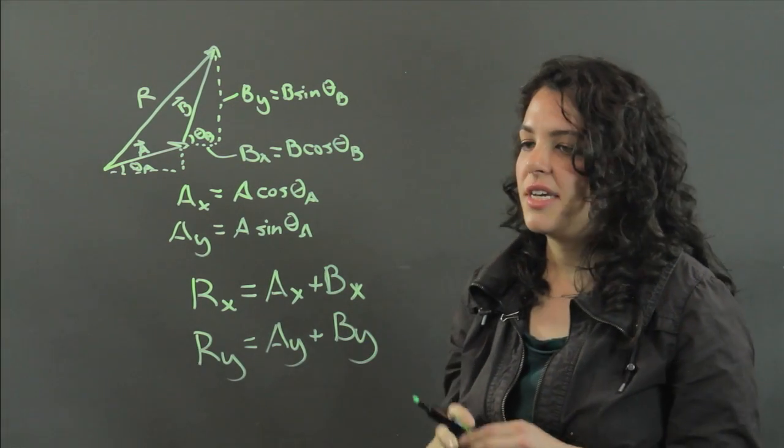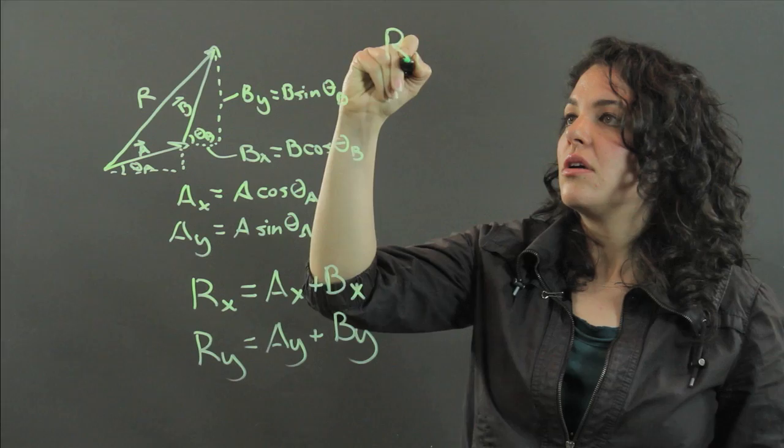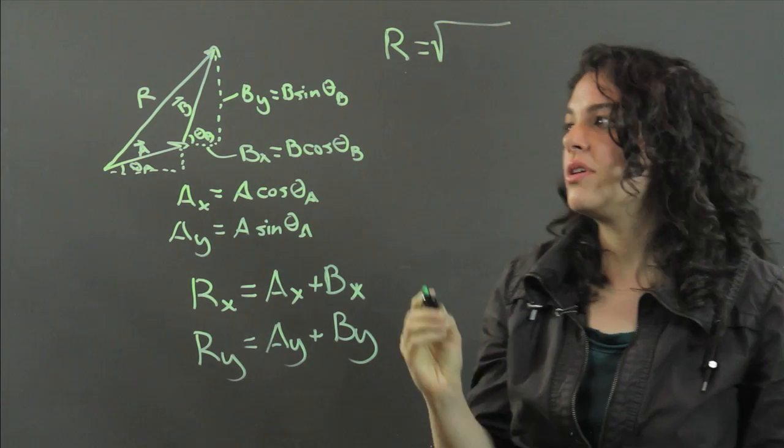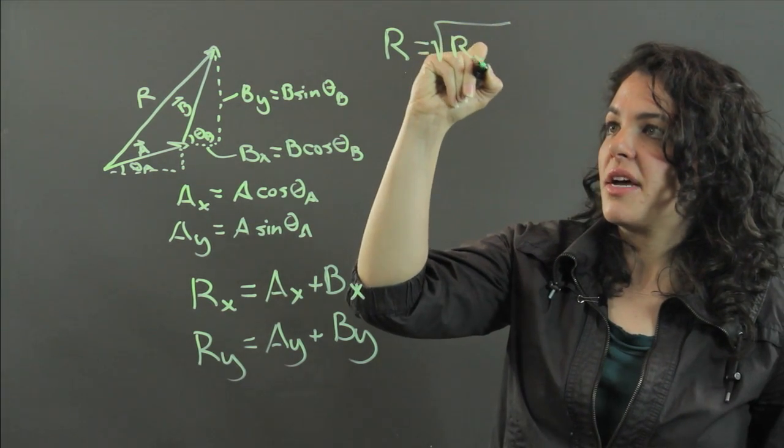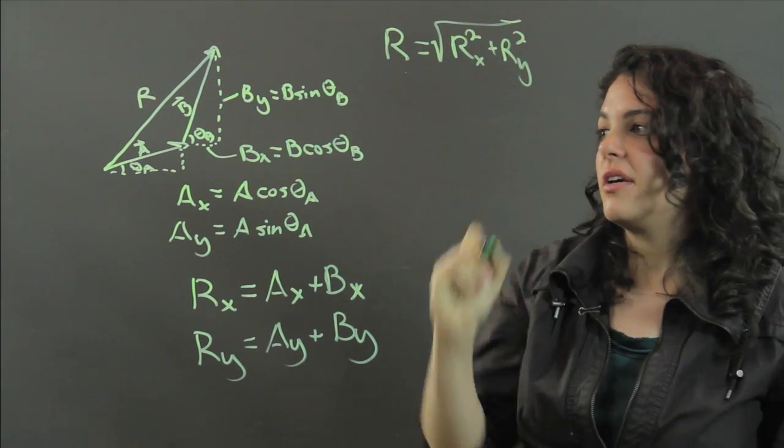Now to get the magnitude of your resultant, r is just going to be the square root of r sub x squared plus r sub y squared.